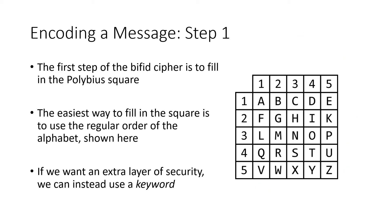The first step is to fill in the square. The easiest way is to just use the regular order of the alphabet — start with A in the upper left-hand corner and go across each row, filling in the letters. Notice that we skip over J and go directly from I to K, all the way to Z in the bottom right-hand corner.